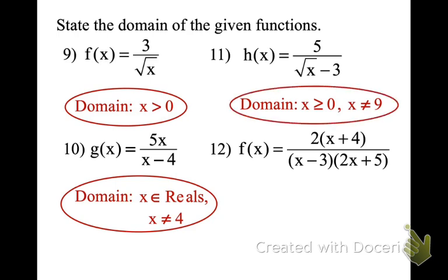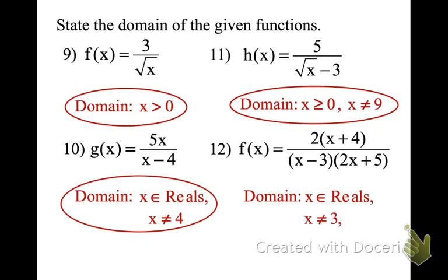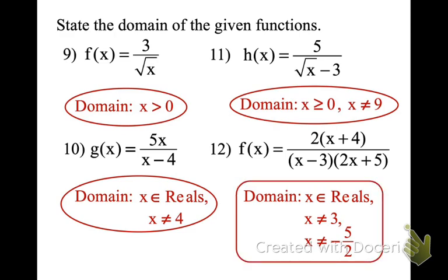In the denominator on the next one — what would give me a 0? The fraction rule means x = 3 would give me 0 there. I also set 2x + 5 equal to 0: subtract 5, divide by 2, getting x = -5/2. So x cannot equal 3 and x cannot equal -5/2. It's an element of the reals, and x ≠ 3 and x ≠ -5/2.